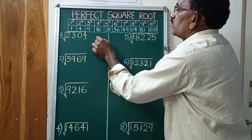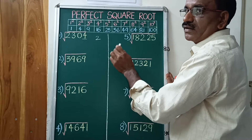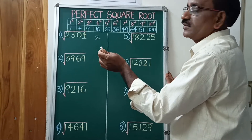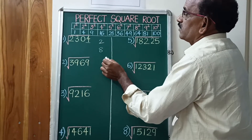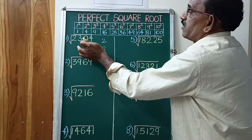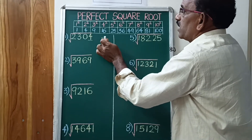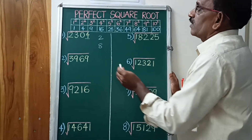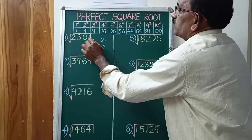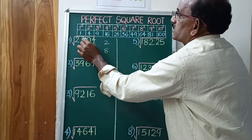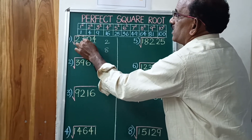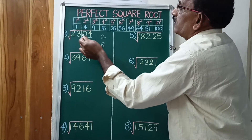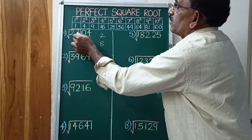The unit digit candidates are 2 and 2. Since 2 serves for 2, the complement is 8. So the square root unit place is either 2 or 8. Next, take 2 digits after the slash — the remaining digits are 23.